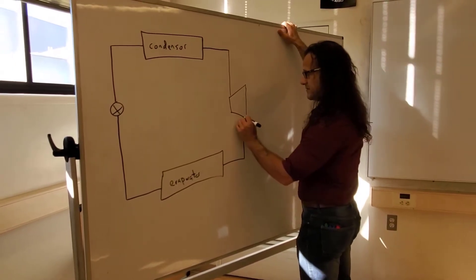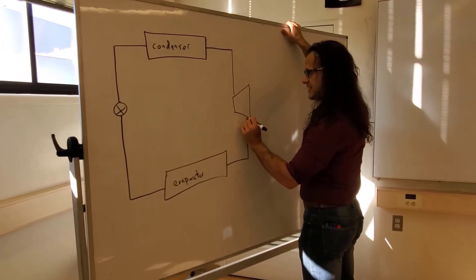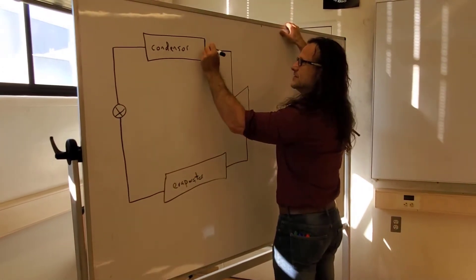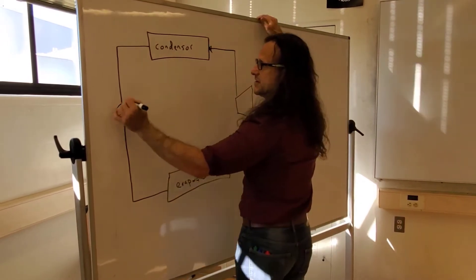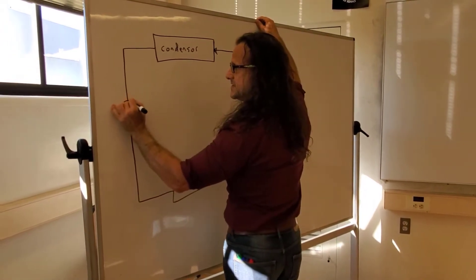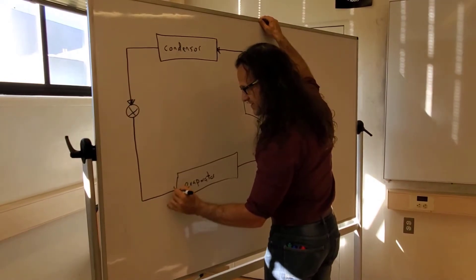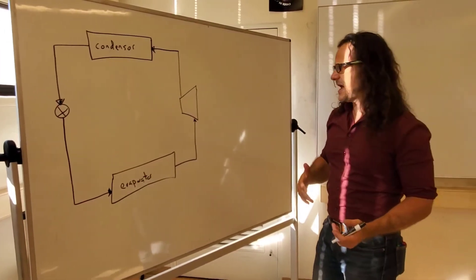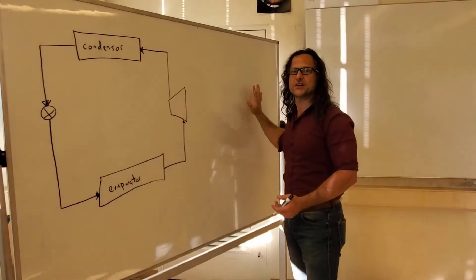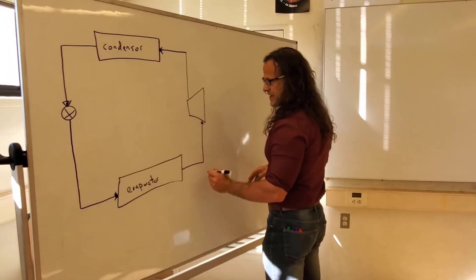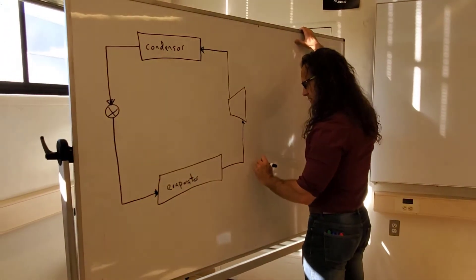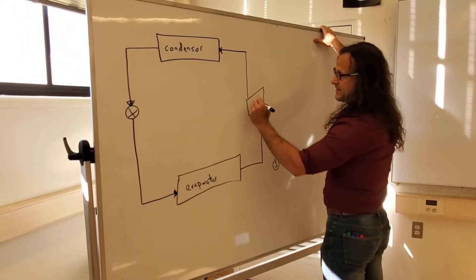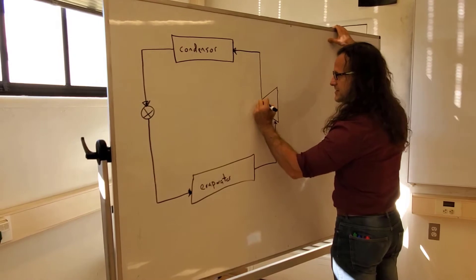The direction we're going for our refrigeration cycle will be: evaporator into compressor, compressor into the condenser, condenser into the expansion valve, expansion valve into the evaporator. Let's give these numbers. It really doesn't matter how we number it, but I'm going to want to match it on a graph and be able to use those later. Let's start by calling this 0.1 down here, between the evaporator and the compressor.